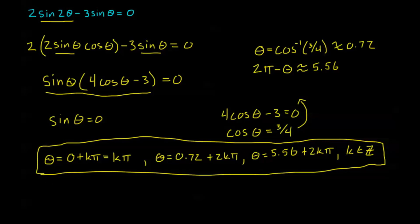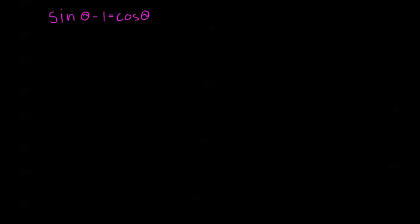One more example for this video. The equation is: sine theta minus 1 equals cosine theta. This one can be a little tricky — at first glance it doesn't seem that difficult, but there's not really anything we can do to solve it directly with any of the identities we've learned so far.